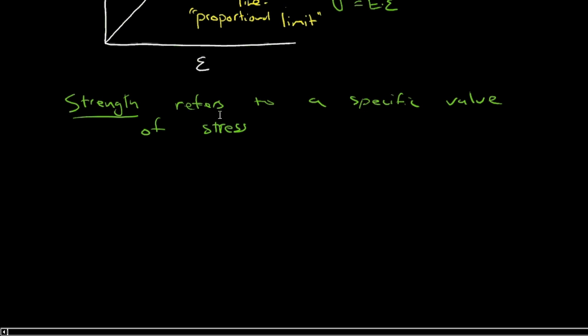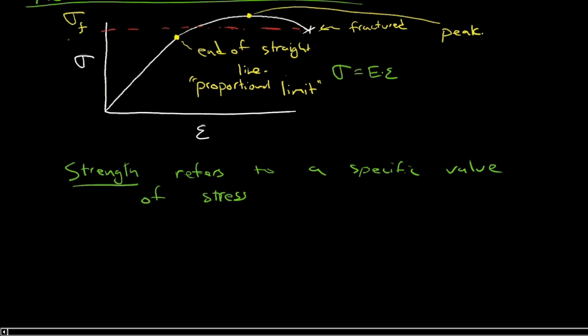So strength, I just want to clarify this: strength refers to a specific value of stress. So you wouldn't be wrong to say that this was the fracture stress, but you're more correct to say it's the fracture strength, because it's a specific value that you've identified for a longer continuum of stress. Stress is just force over area. Strength is a specific value of stress.